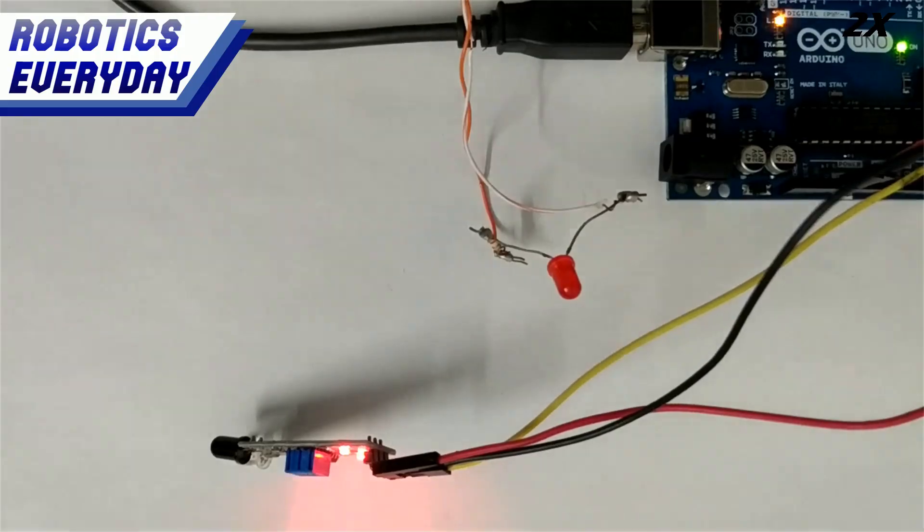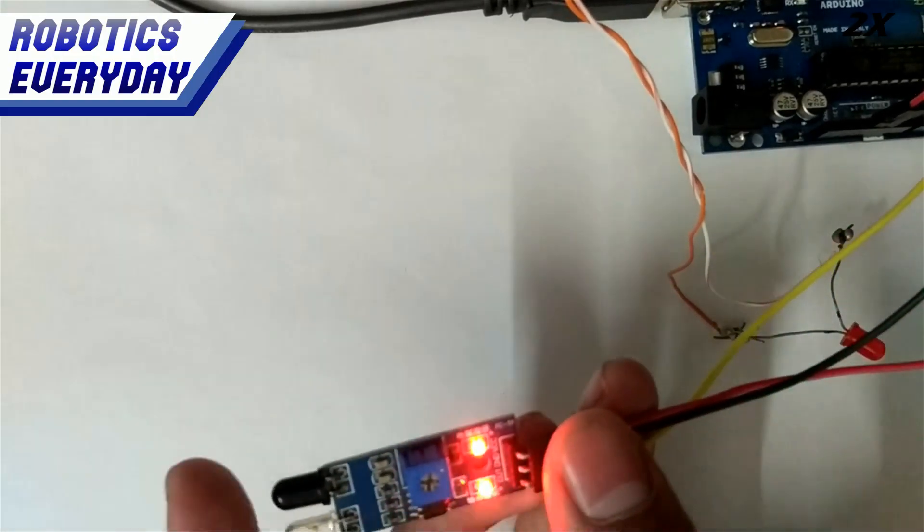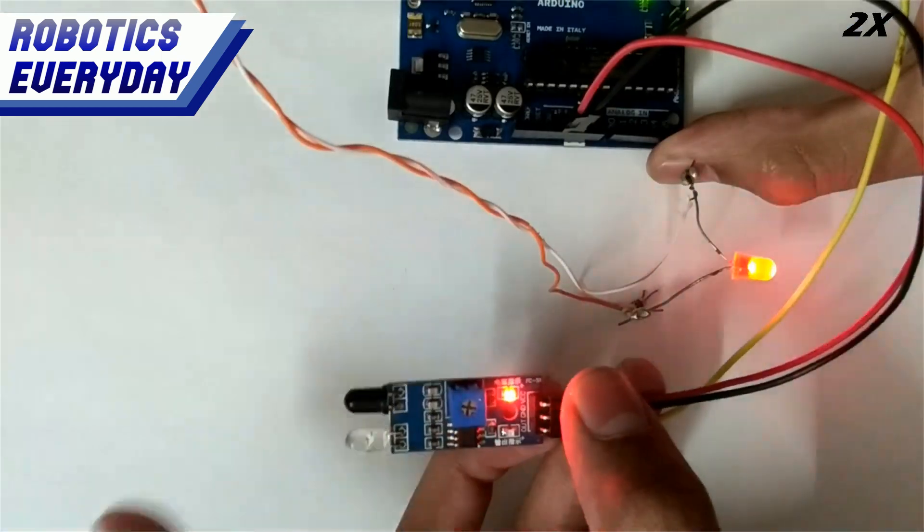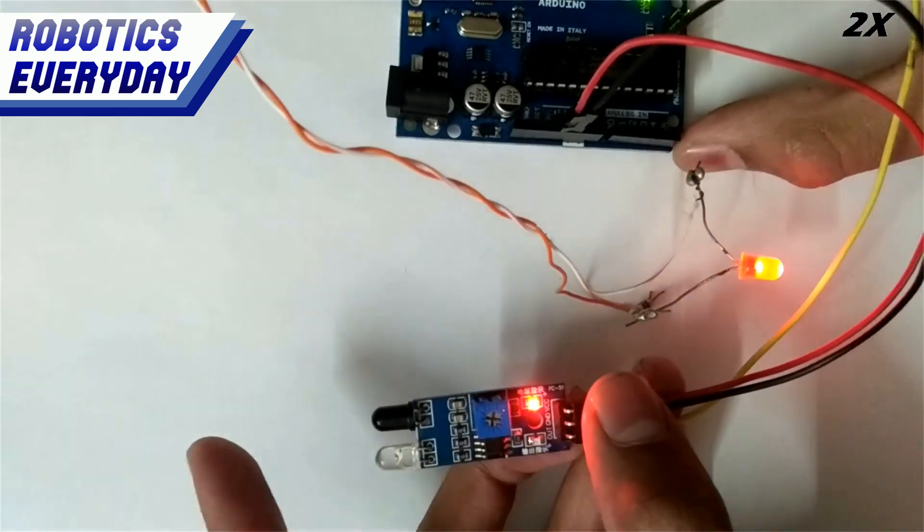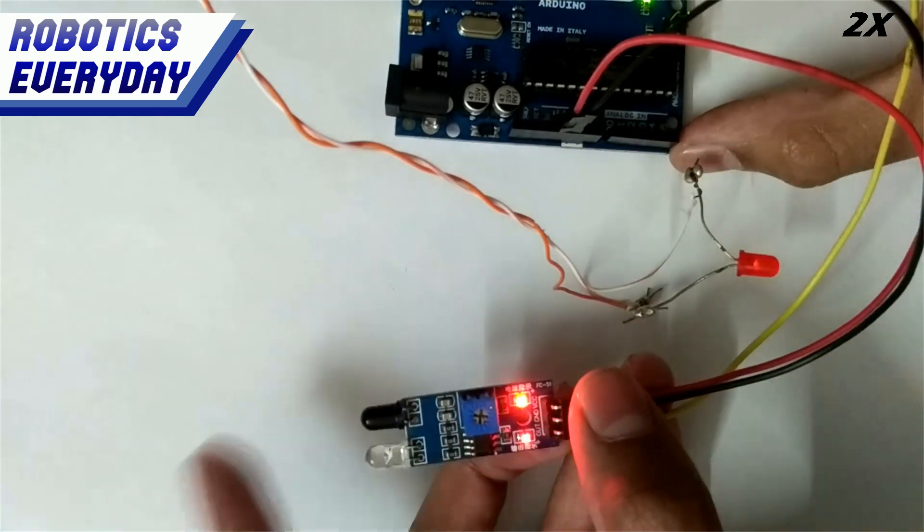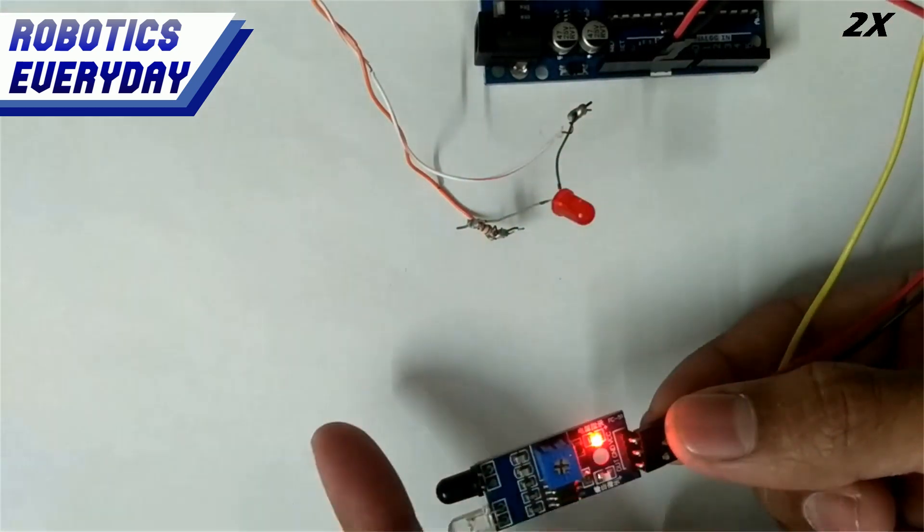As we have connected all the components together, now it's time to upload the code. After uploading the code, we can see that the infrared sensor is able to detect the object in front of it and send the signal to Arduino, which then flips the state of the LED with the logic that is programmed into it.